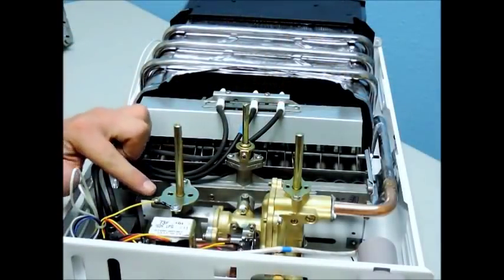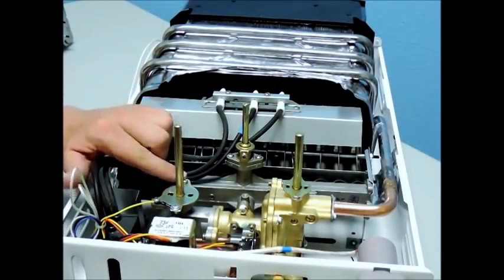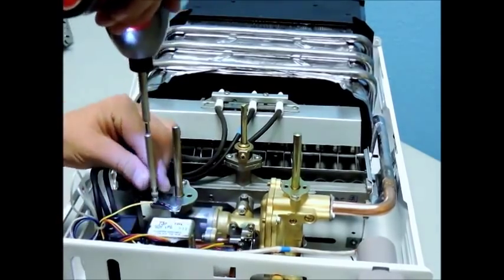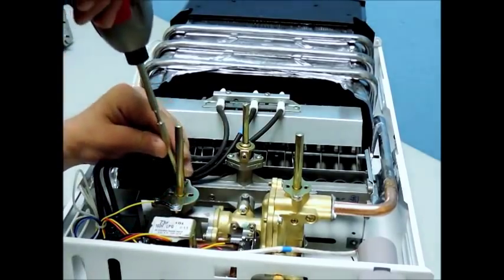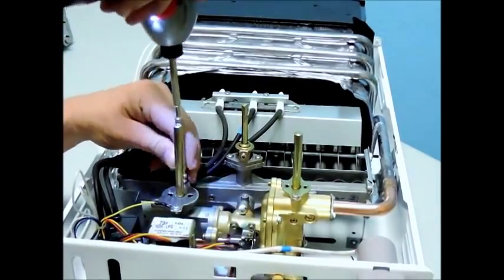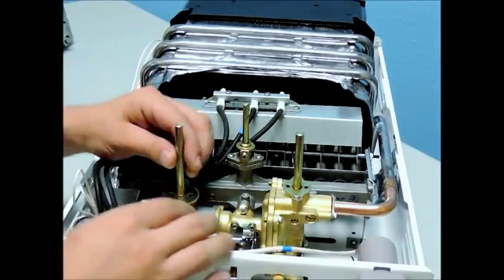Start by removing the two screws that secure the retaining plate of the gas valve stem. Please note, leave the screw securing the ground wire in place. Pull the stem directly out from the unit and slide the retaining plate off the gas valve stem.